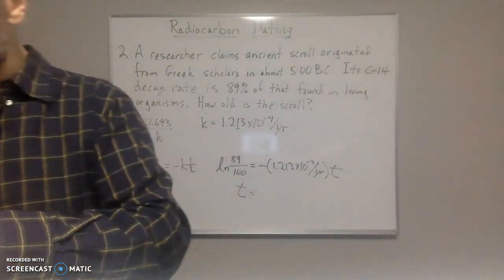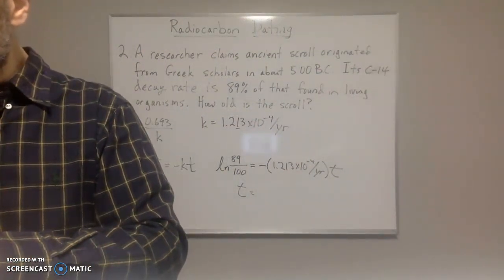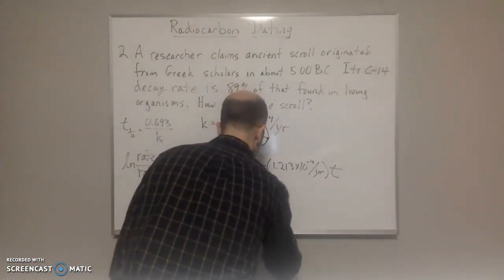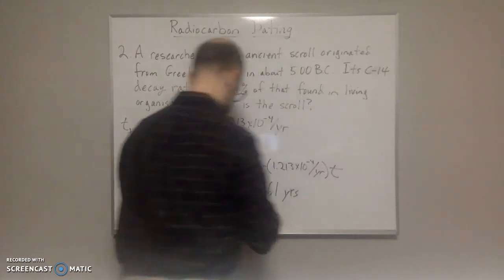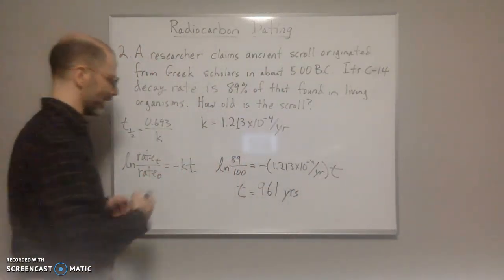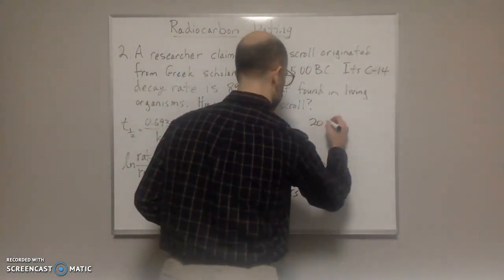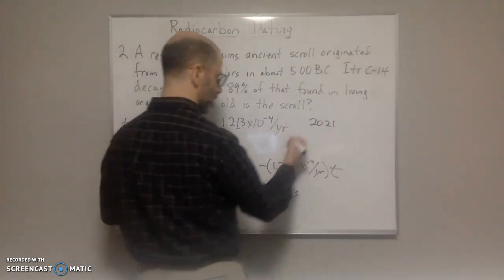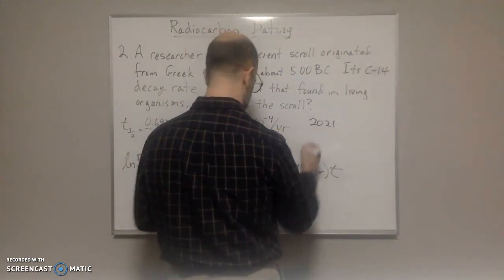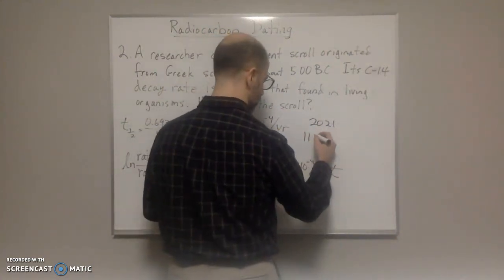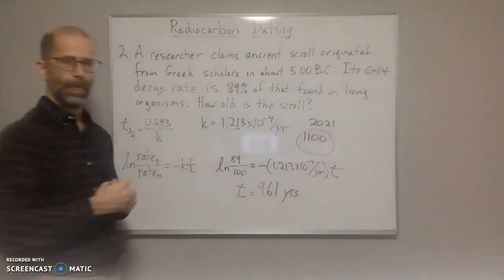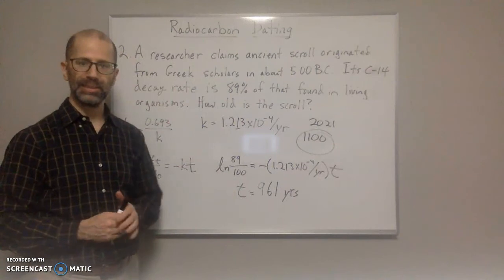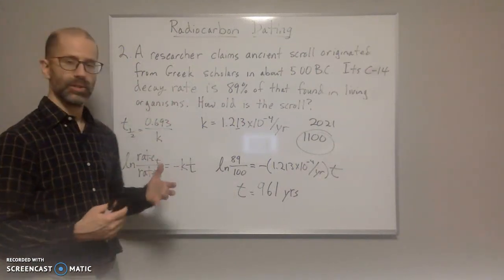And so we calculate that out to be 961 years. So 961 years old. So right now the year is 2021. So if we take about, this would be around the 1100s. So definitely not 500 BC. So the scroll is not authentic.